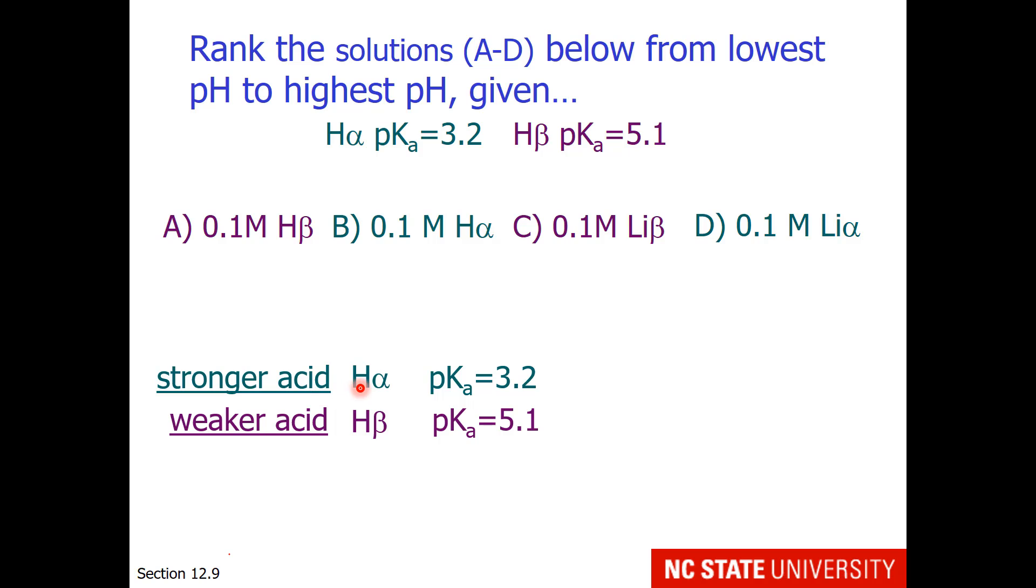So I'm going to set this up like your acid base table, where strong acids are on the upper left and weaker acids are on the lower left. We know that A and B, which are acidic, are going to be lower in pH than C and D. And I hope you realize that since H-alpha has the lower pKa, it is the stronger acid. So it will have the lower pH, and H-beta will have the higher acidic pH.